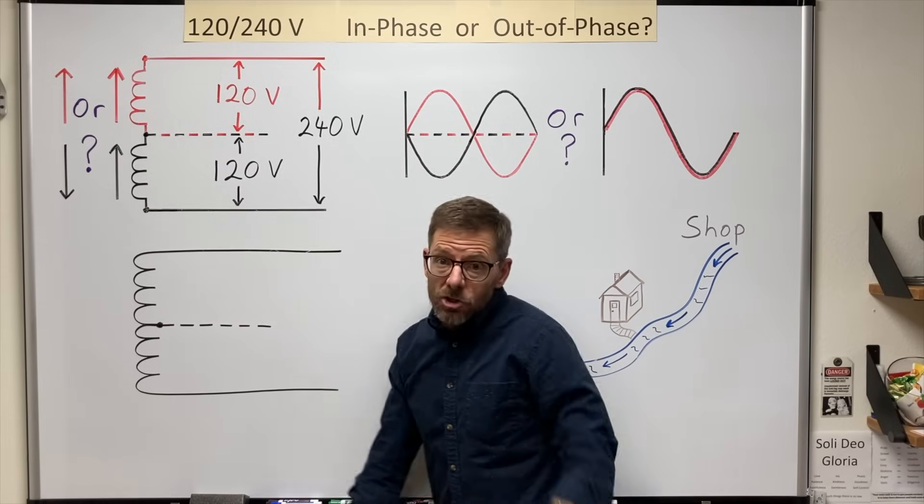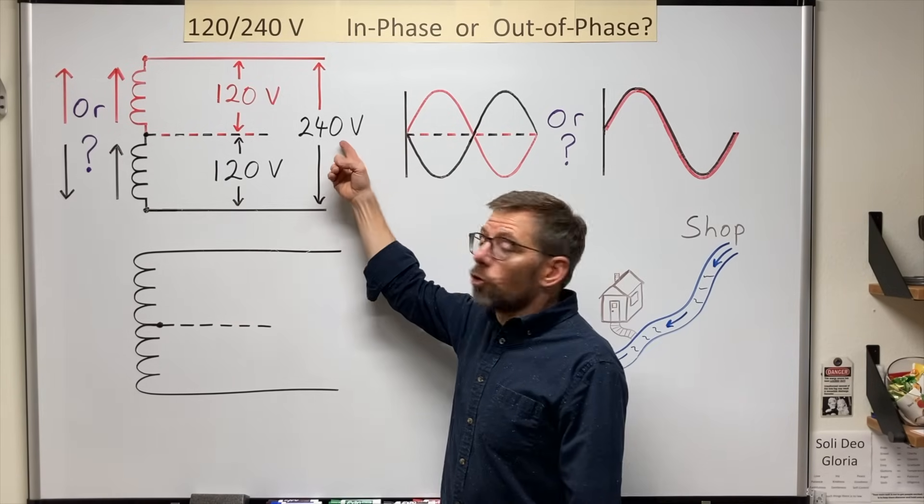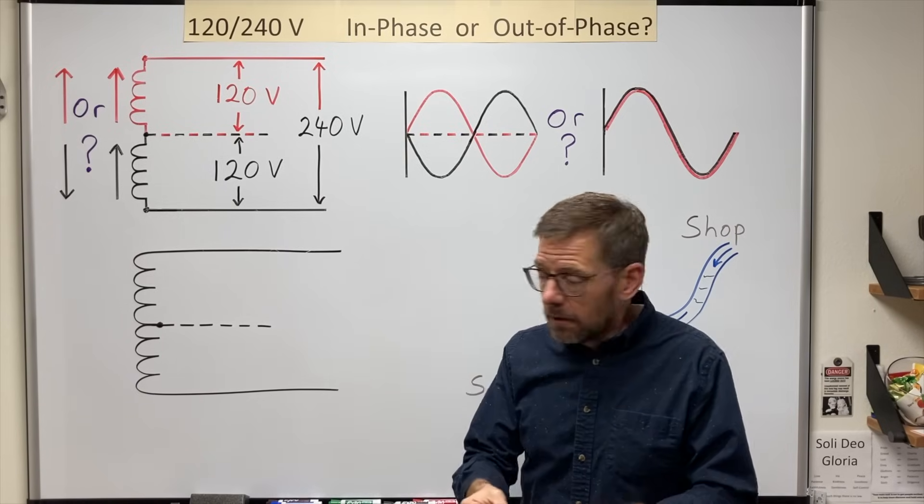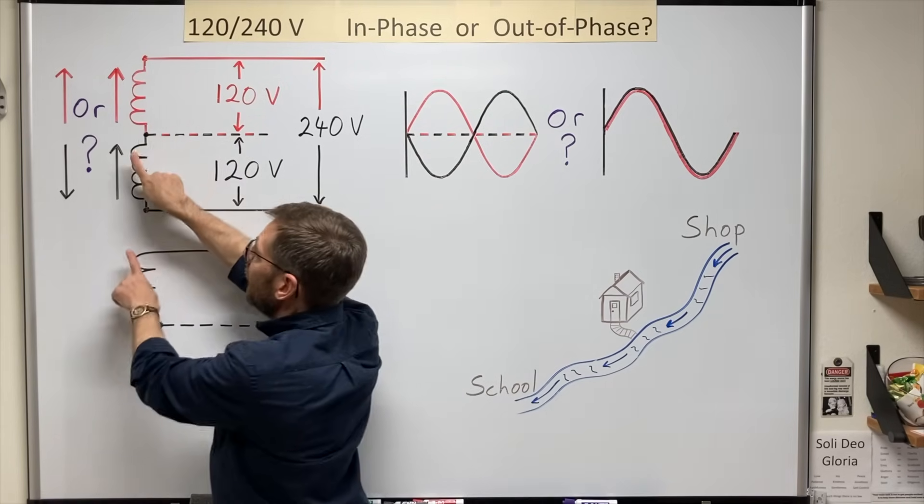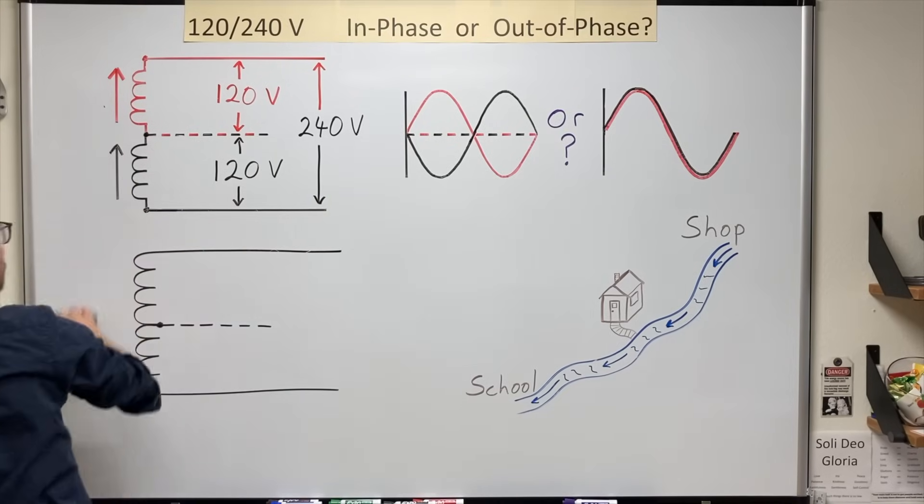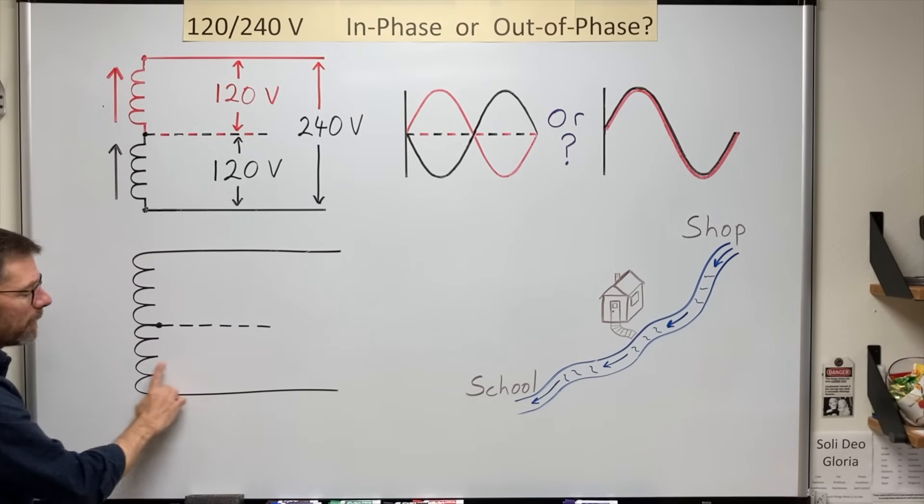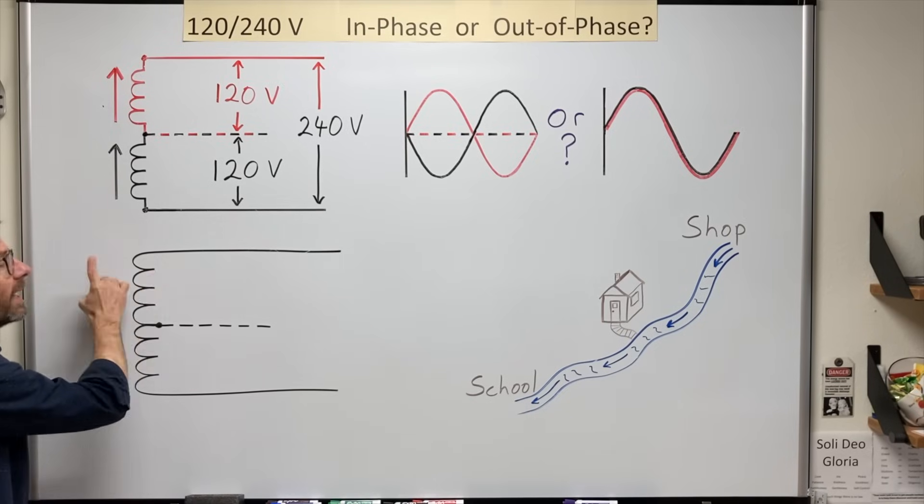My declaration, therefore, is that in order to have a 120/240 volt system to operate correctly, the two halves or two windings must be in phase with each other. And that means that for this winding here, the turns have to be wound in the same direction all the way up.